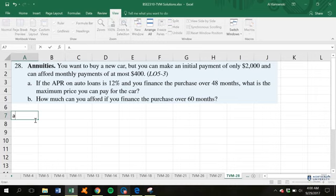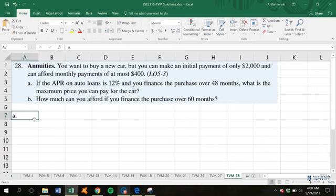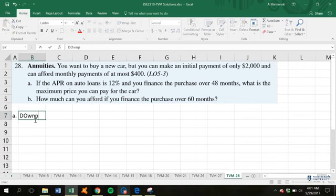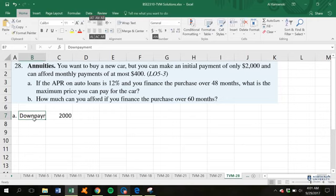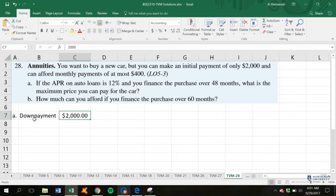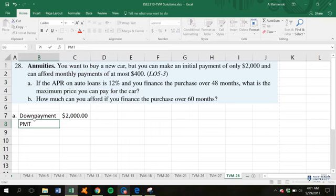You want to buy a new car, but you can only make an initial down payment of $2,000. Let's go ahead and drop that down, line up our columns here, make those dollars. And can afford monthly payments of at most $400.